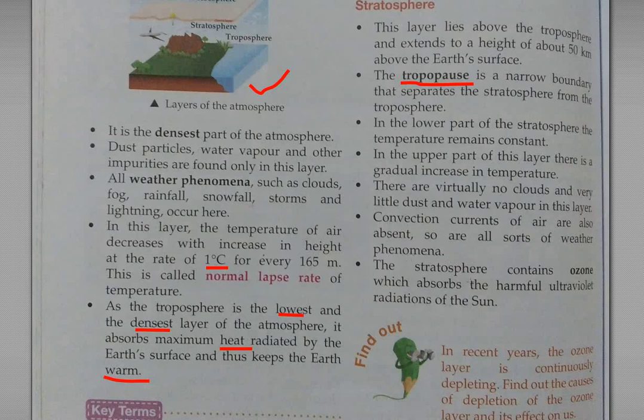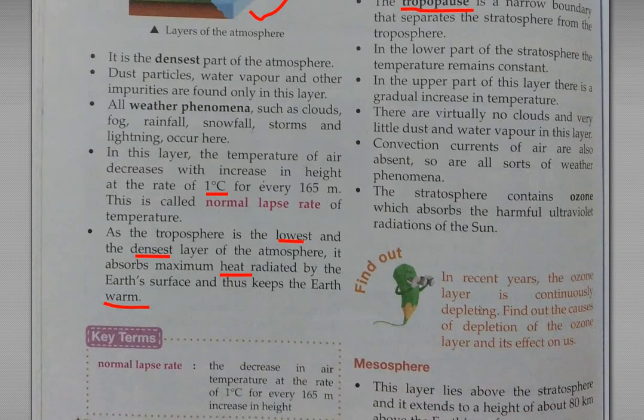The Stratosphere contains ozone, which absorbs the harmful ultraviolet radiation of the sun.